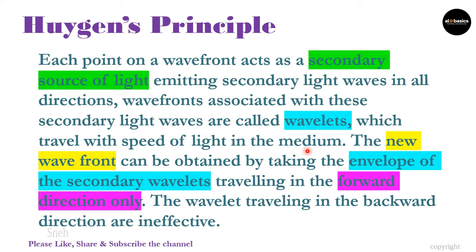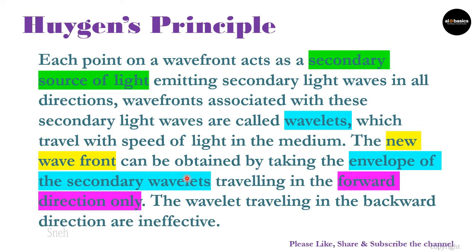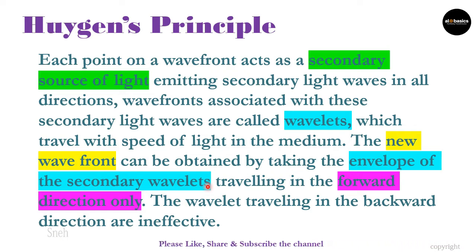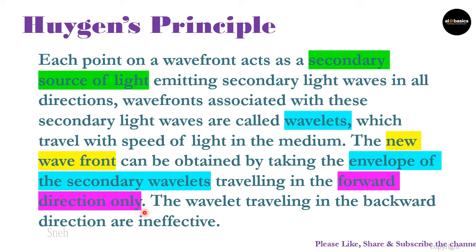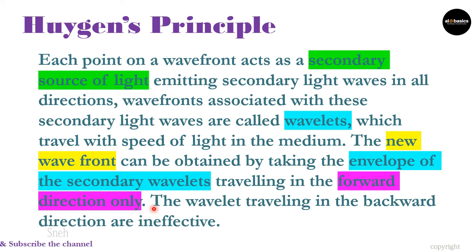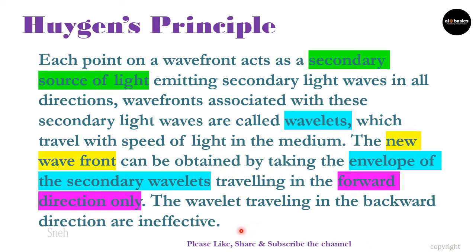Now we want to construct a new wavefront. The new wavefront can be obtained by taking the envelope of the secondary wavelets, or in other words, the tangent to all these secondary wavelets traveling in the forward direction only. We are considering only those wavelets traveling in the forward direction — that envelope or tangential surface is said to be the new wavefront. The wavelets traveling in the backward direction are ineffective.